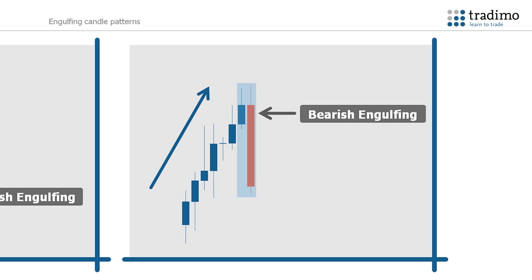And finally, the second candlestick body must be opposite in colour to the first candlestick body. For example, if the first candlestick is bullish, the second candlestick must be bearish.